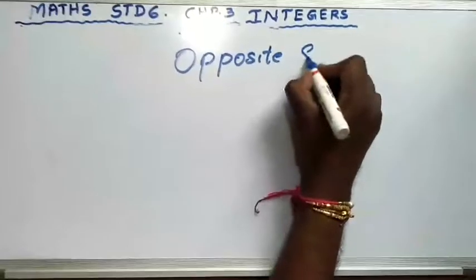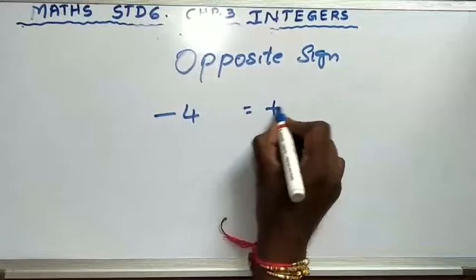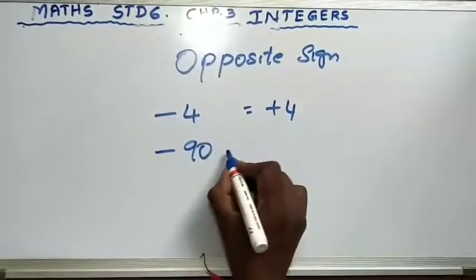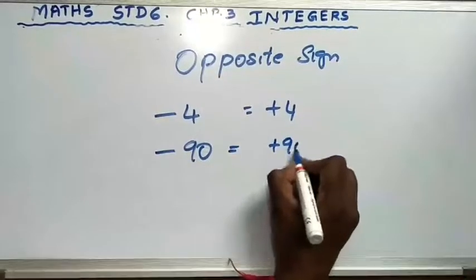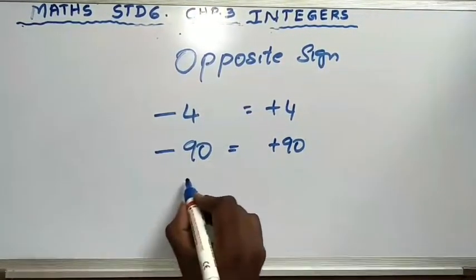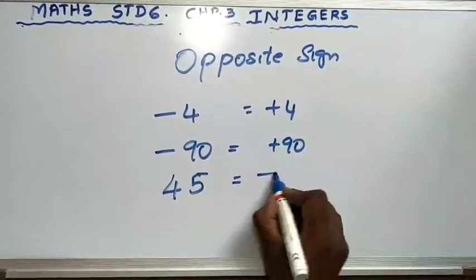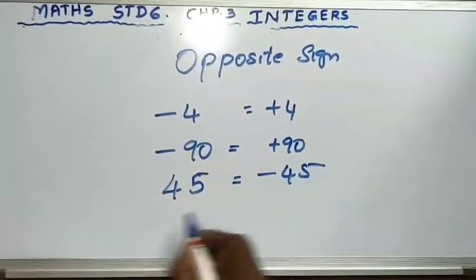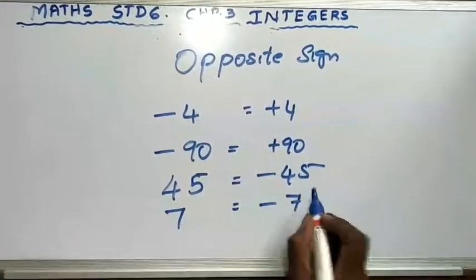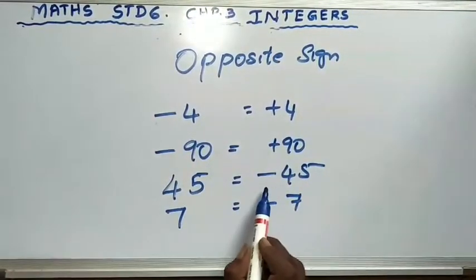Opposite sign: what is the opposite of minus 4? It is plus 4. What is the opposite of minus 90? It is plus 90. What is the opposite of 45? It is minus 45. What is the opposite of 7? It is minus 7. So plus opposite is minus and minus opposite is plus.